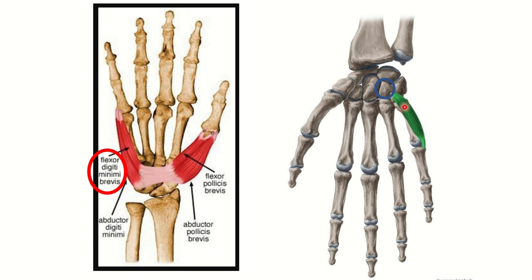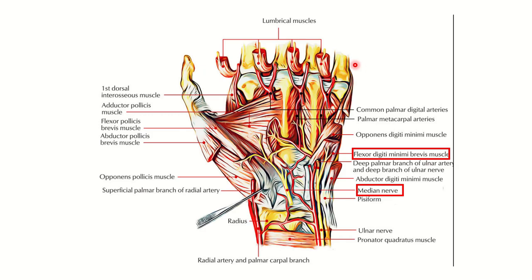The muscle attaches to the base of the proximal phalanx and to the wrist bone, and it is related to the hamate bone. In this area, we can see the flexor digiti minimi brevis muscle along with the ulnar nerve and the ulnar artery, which are closely related to this muscle.